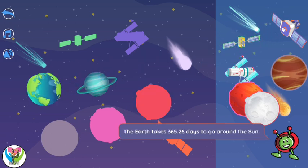The Earth takes 365.26 days to go around the Sun.